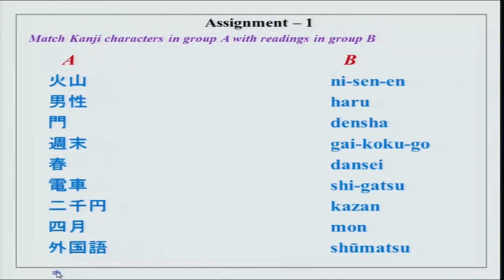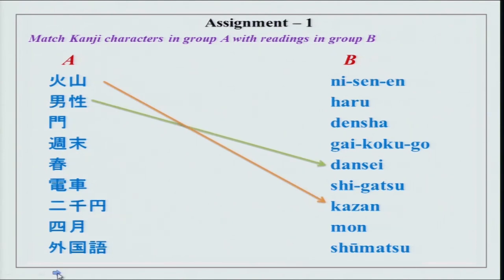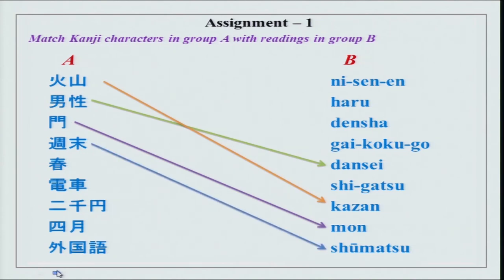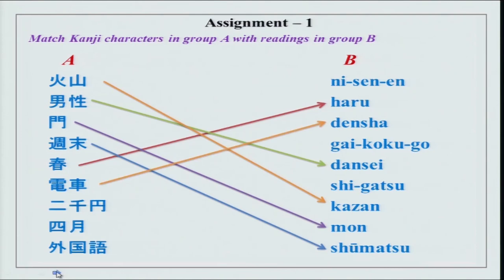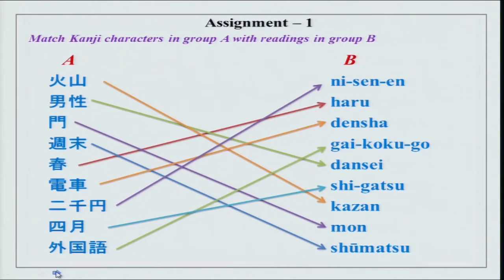The first assignment is Kanji. The Kanji characters are here with their equivalents written in Roman. The first one is Kazan, which is a volcano; Danse is boy or man; Mon is a gate — you can see from the character itself, it appears like a gate. Then Shumatsu, which is weekend; Haru, Spring; Densha; Nisenen; Shigatsu; and Gaikoku Go. Go of course you see written all the time on the Kokuban — the blackboard. This is Go for any language; Gaikoku is a foreign language.